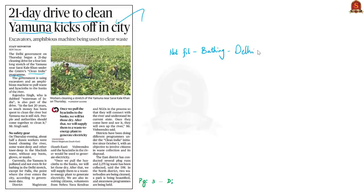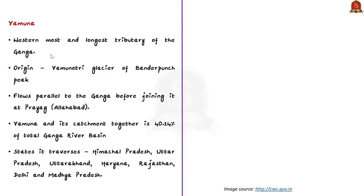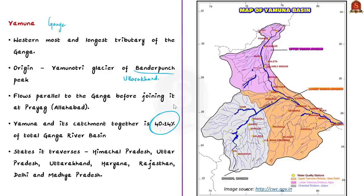Yamuna is a tributary of river Ganga and is the westernmost and also the longest tributary of river Ganga. Yamuna originates in the Yamunotri glacier situated on the western slopes of the Bandar Punch peak. This Bandar Punch is in the Mussoorie range of the lower Himalayas in Uttarakhand. Yamuna initially flows parallel to the Ganga and then joins the Ganga at Prayag, which is in Allahabad. Note that Yamuna is a right bank tributary of Ganga. Yamuna and its catchment together is around 40.14% of the total Ganga river basin. In its journey, Yamuna traverses through many states including Himachal Pradesh, Uttar Pradesh, Uttarakhand, Haryana, Rajasthan, Delhi as well as Madhya Pradesh.